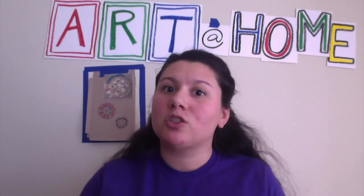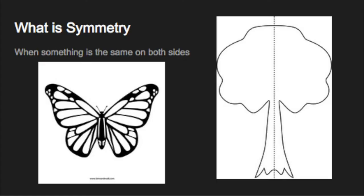Today we're going to be talking about symmetry. You probably know about symmetry from school, but we're going to learn some new things about it today. Symmetry means that something is the same on both sides, just like how butterfly wings are the same on both sides — each wing is identical to the other. With this tree, you can see symmetry along an axis, an imaginary dotted line going down the center. Both sides of the tree on either side of the axis are the same, so they're symmetrical.